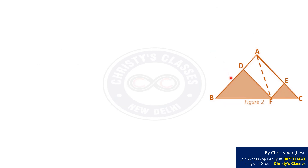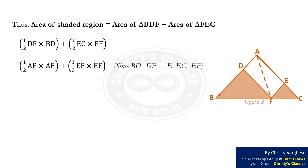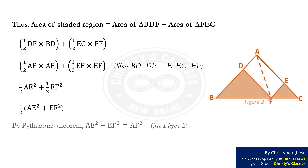Thus, area of the shaded region equals area of triangle BDF plus area of triangle FEC. This equals half DF into DB plus half EC into EF. As BD equals DF equals AE and EC equals EF, this can be written as half AE² plus half EF², which equals half of (AE² plus EF²). By Pythagoras theorem, AE² plus EF² equals AF².